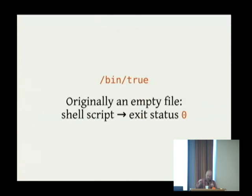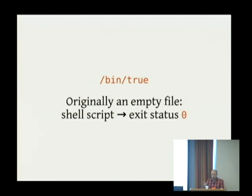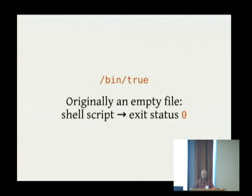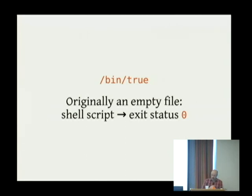/bin/true's job is to return exit status zero. In the first versions of Unix it was simply an empty file, because it was 1972 and that saved bytes. Your shell would assume the program was a shell script, run this zero-length shell script, execute no commands, not encounter a failure doing so, and return exit status zero.